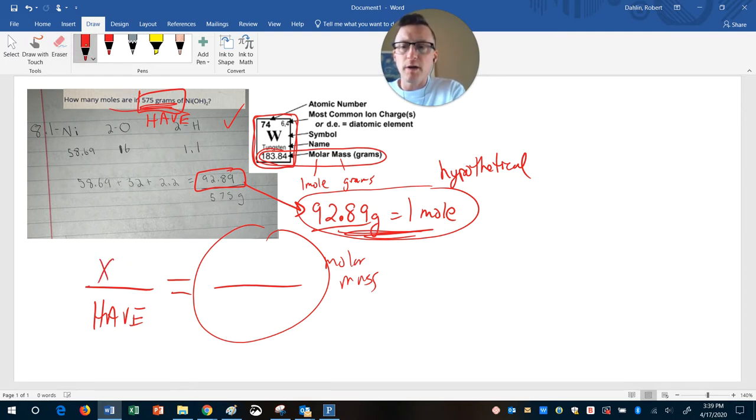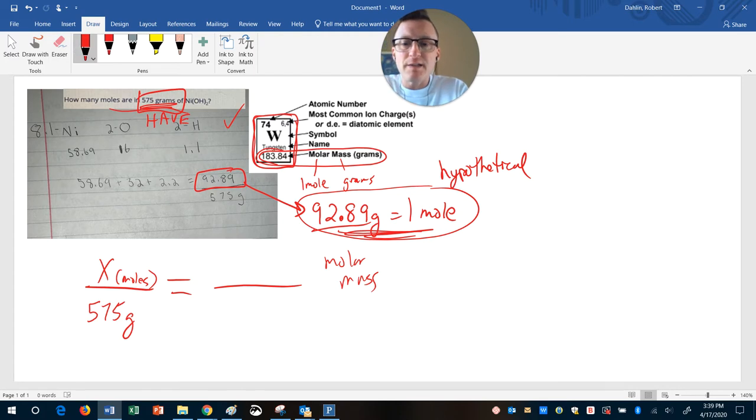So we want, that's going to be our X. I'm just going to put in parentheses moles so that I remember what I'm looking for. What do we have? We have 575 grams. The reason that it's important to put those in a certain order is because on this side, the units have to match up. When you have an equal sign in between, in order for this fraction to be equal to the other side, the units have to line up, which means this side has to have grams on the bottom because I have grams on the bottom of 575, and then moles on top. The numbers that we get for this come from our molar mass. So 92.89 grams, and then one mole.